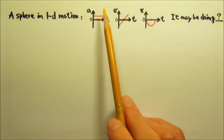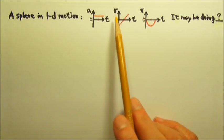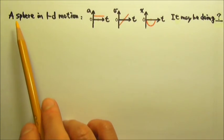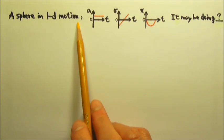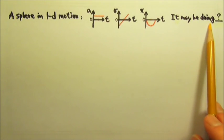These graphs show the acceleration, velocity, and the position as functions of time for a sphere in one-dimensional motion. What could the sphere be doing?